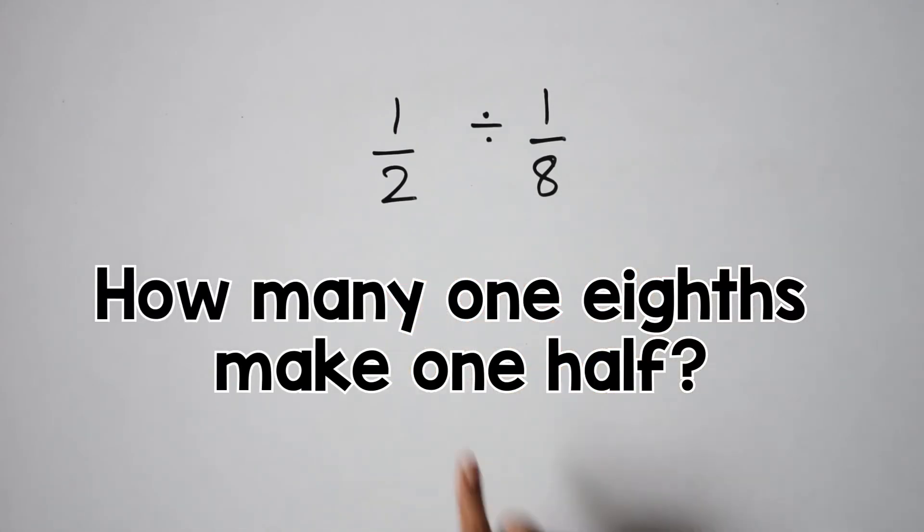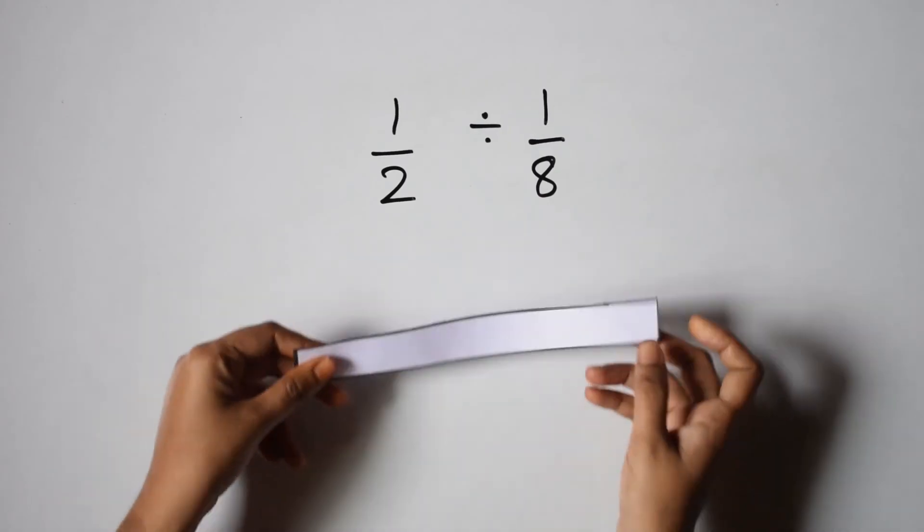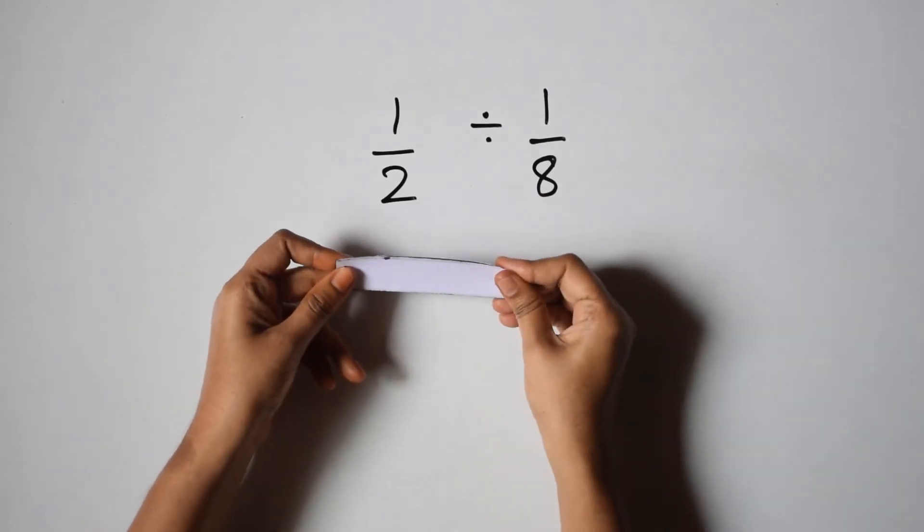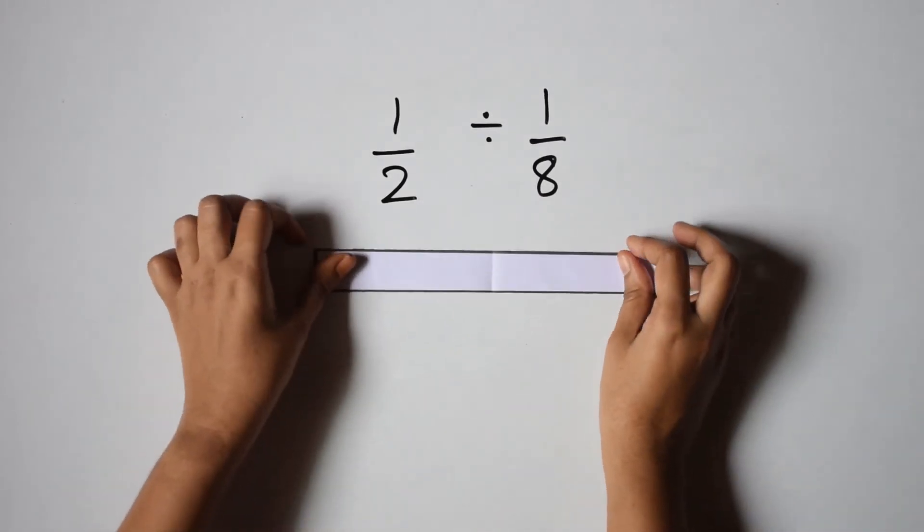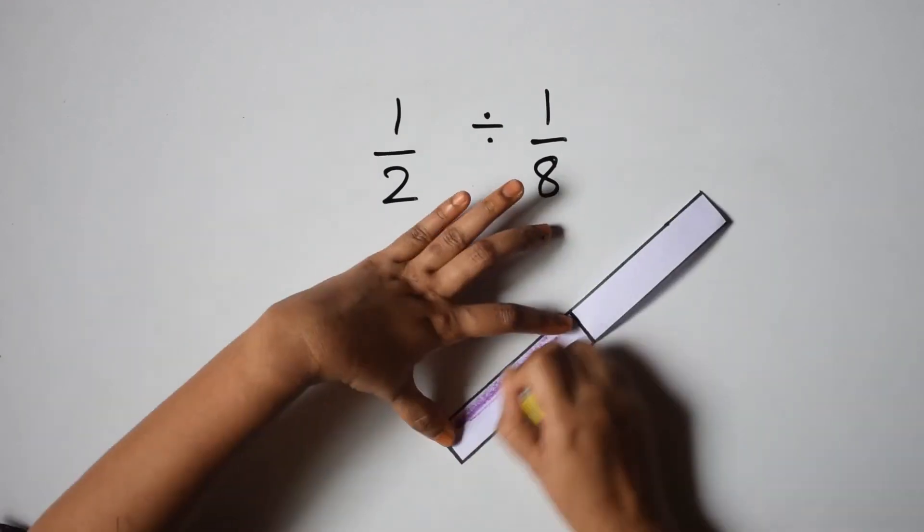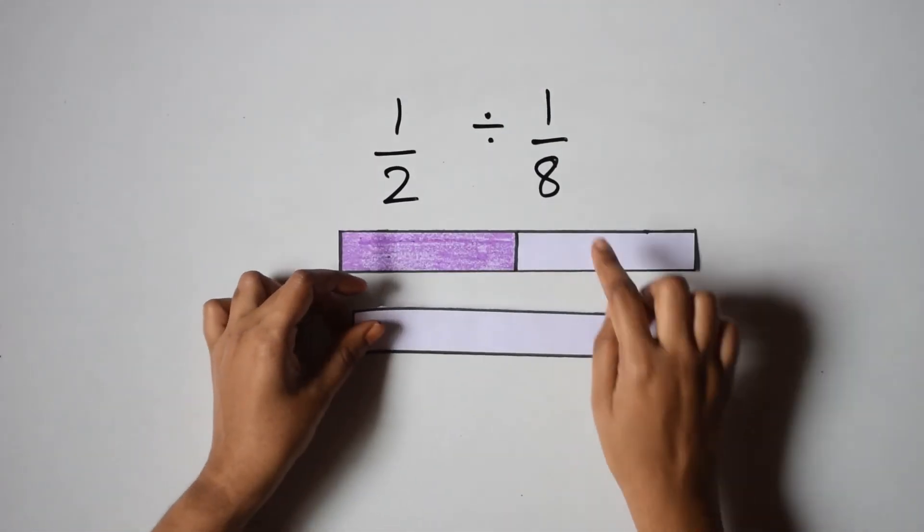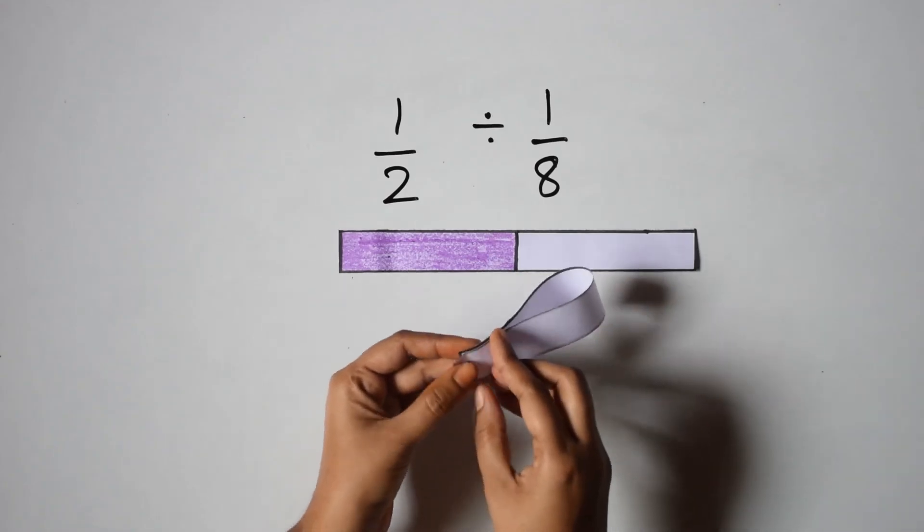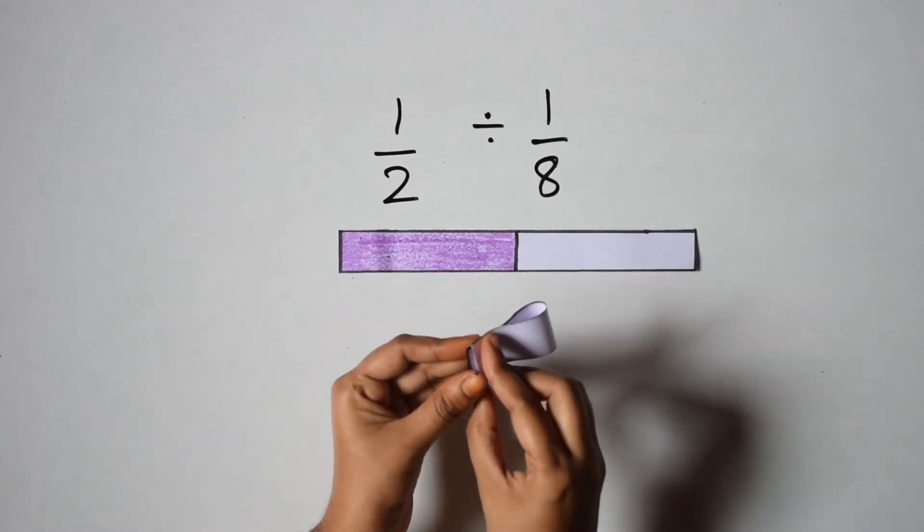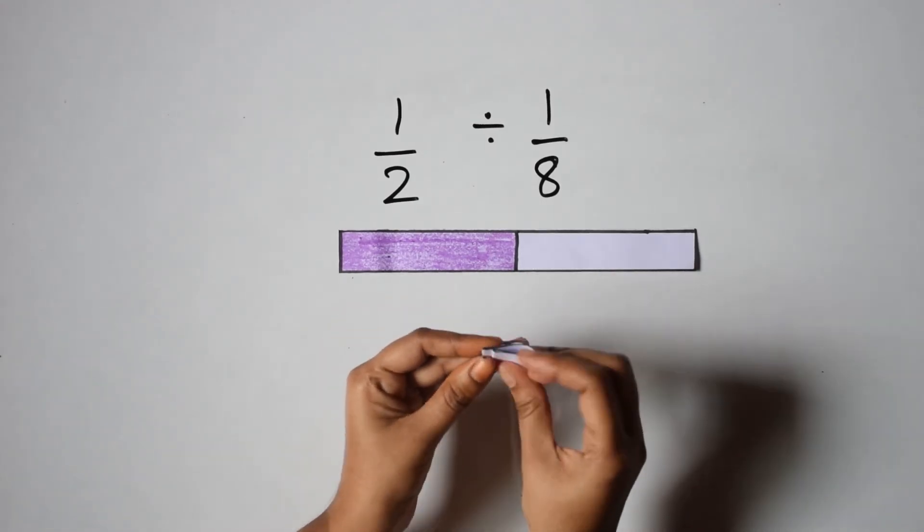Let's denote both of these on a paper strip. To denote half, we fold the paper into two parts and color one half. To denote one eighths, we divide the paper into eight equal parts and color one part.